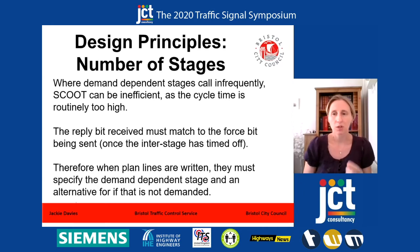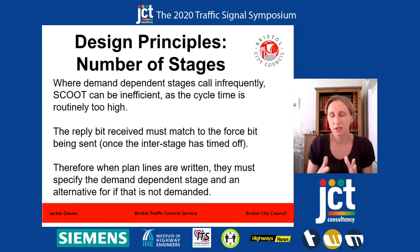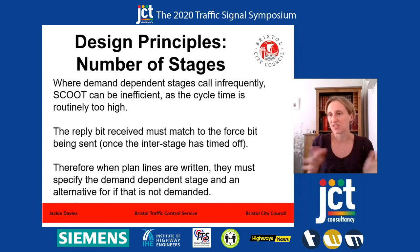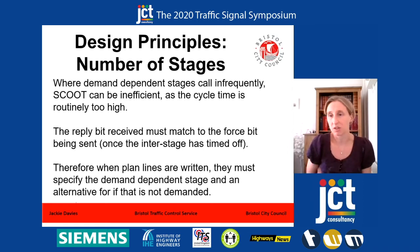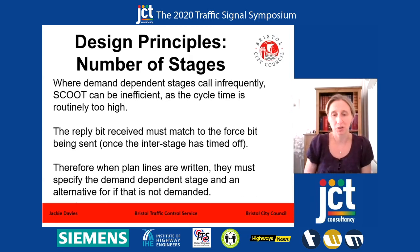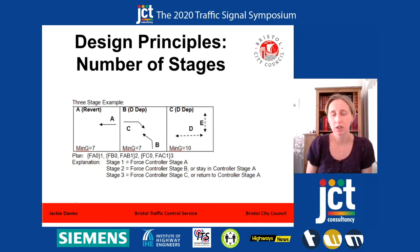The key when you're doing SCOOT is to keep your stages as few as possible — the fewest number that you can get away with. The second thing is that writing staging plans can be really tricky. The crux of it is that when you receive your reply bit back from the site, it has to match the force bit that you sent once that interstage has timed off. So if you have demand-dependent stages and you ask it to go to stage two, if that stage is not demanded, it won't do that — so you have to say 'or stay in A.' You're constantly having to provide lots of options and alternatives, and that can get really complicated when you have a lot of demand-dependent stages. So again, keep it simple in SCOOT.